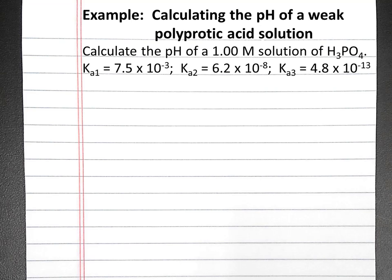Our first step is to determine what the major species will be in solution. Since phosphoric acid is a weak acid, it will not dissociate appreciably, so our major species will be water and phosphoric acid.